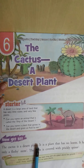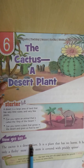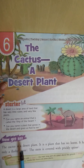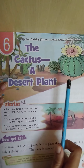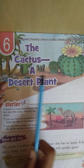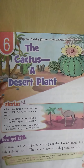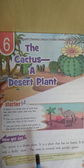Cactus is a desert plant. The plant that grows in the desert region is known as cactus. As you can see, there are various kinds of cactus present here, and these are mostly found in desert regions.